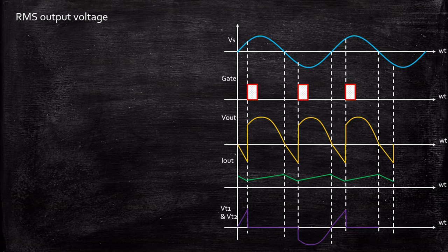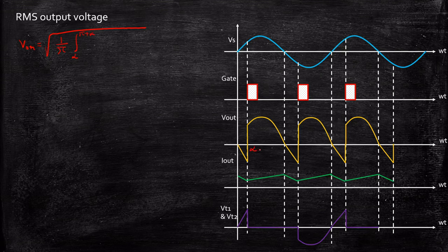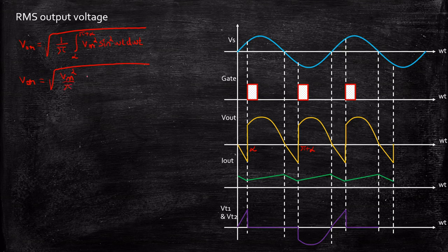Now let's take a look at the RMS output voltage. The RMS output voltage by fundamental definition is Vout_RMS = √[(1/π) ∫[α to π+α] Vm² sin²(ωt) d(ωt)]. Taking Vm² outside, and substituting sin²(ωt) = (1 − cos(2ωt)) / 2, we get Vout_RMS = √[(Vm²/π) ∫[α to π+α] (1 − cos(2ωt))/2 d(ωt)].